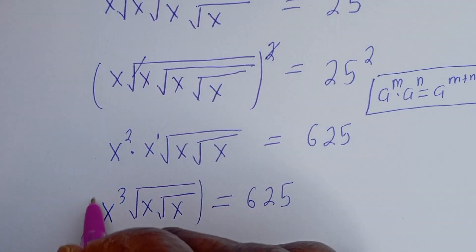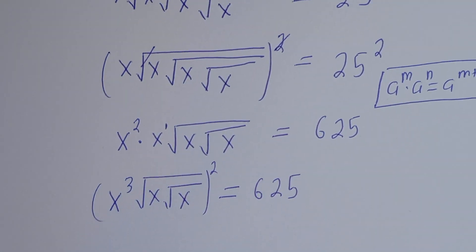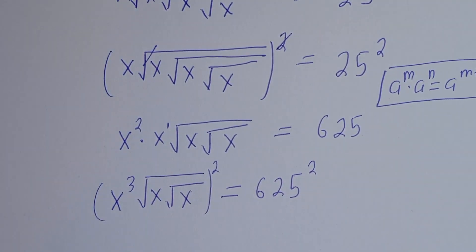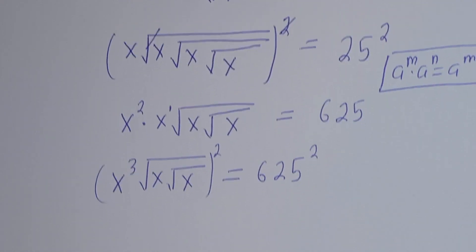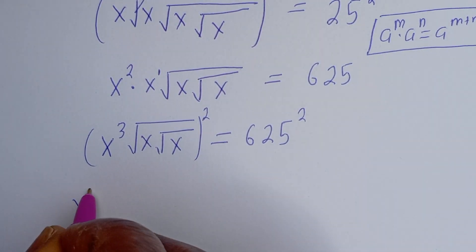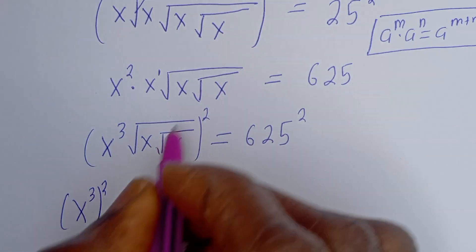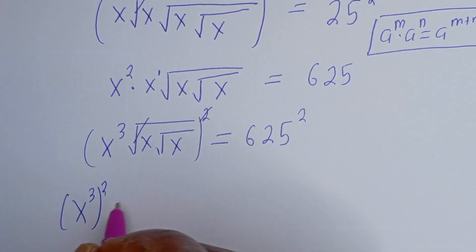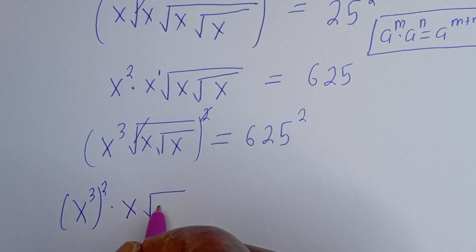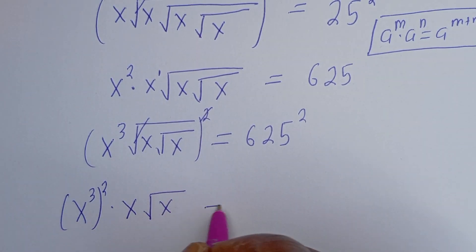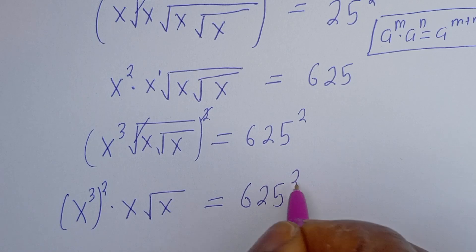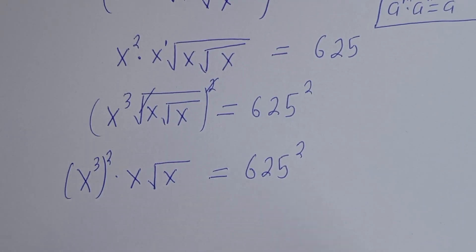Now, s squared times s times square root of s times square root of s is equal to 625. Let's square both sides again. Then we have s to some power times square root of s is equal to 625 squared.